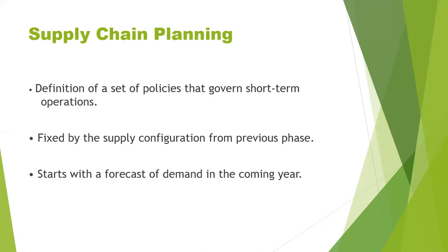The next phase is Supply Chain Planning. Supply chain planning defines a set of policies which govern short-term operations. The time frame considered here is a quarter to a year. The supply chain configuration determined in the strategic phase is fixed, and this configuration establishes constraints within which planning must be done. The goal of planning is to maximize the supply chain surplus that can be generated over the planning horizon, given the constraints established during the design phase, and it starts with a forecast of demand in the coming year.